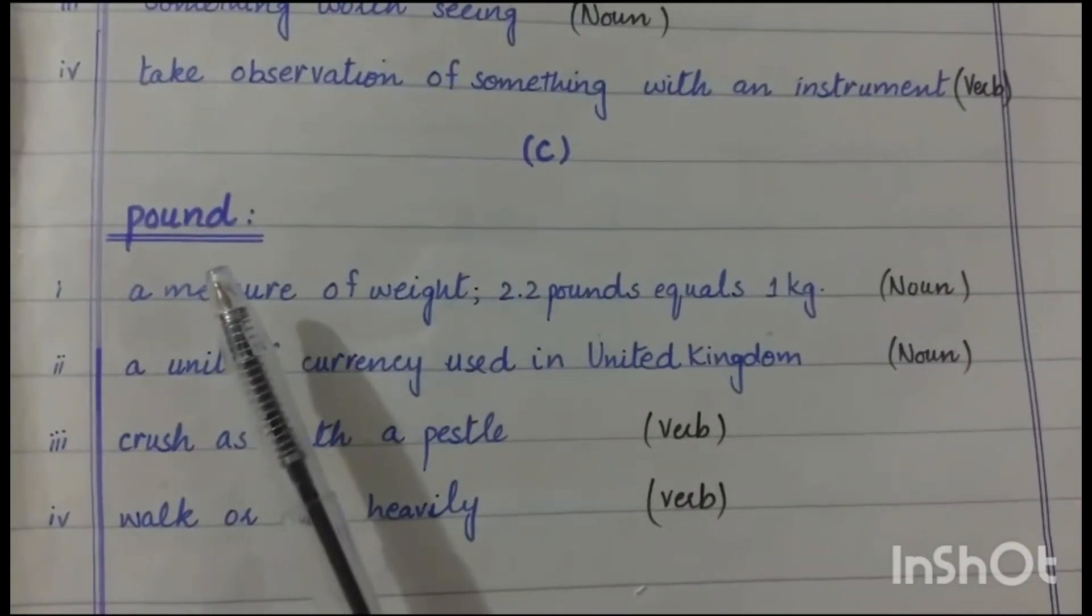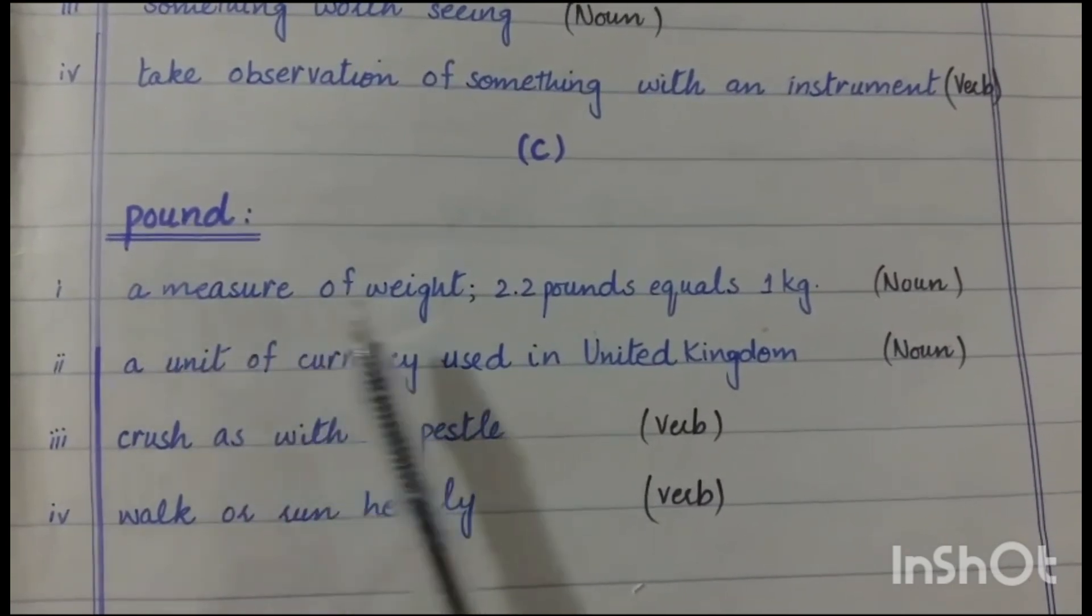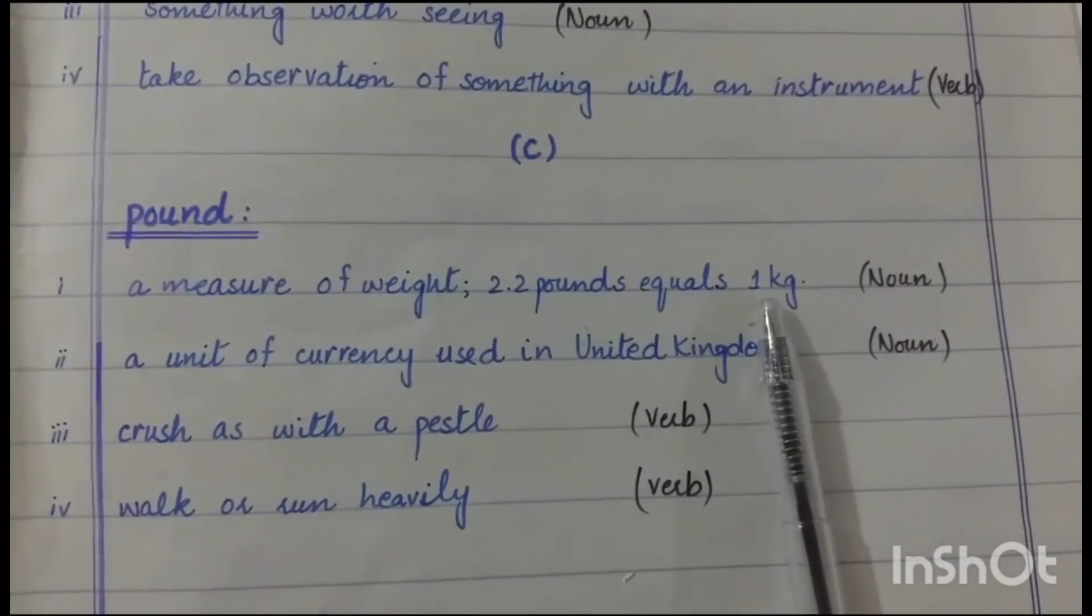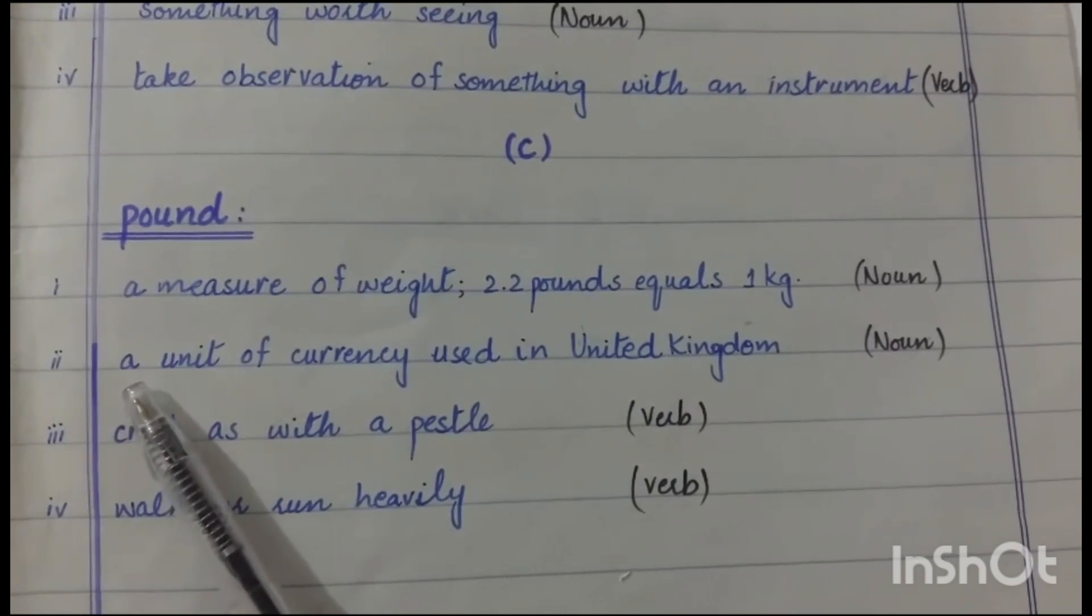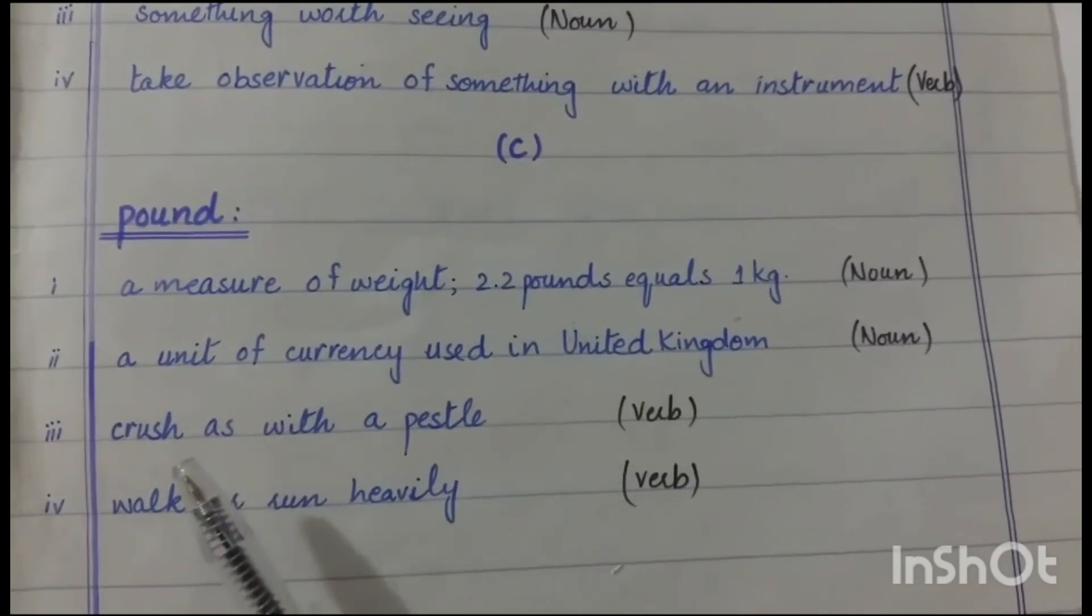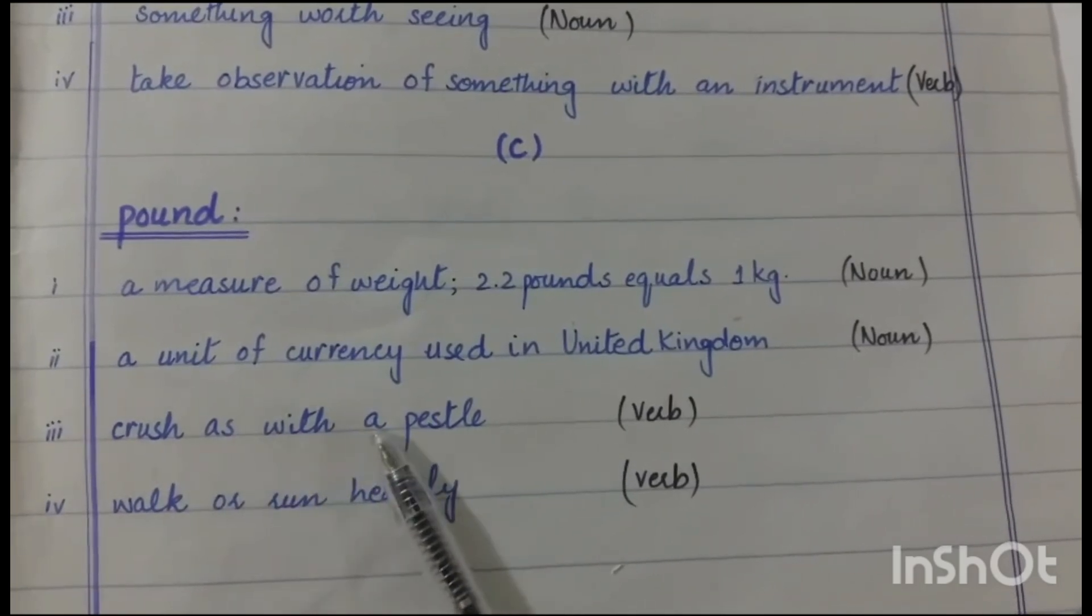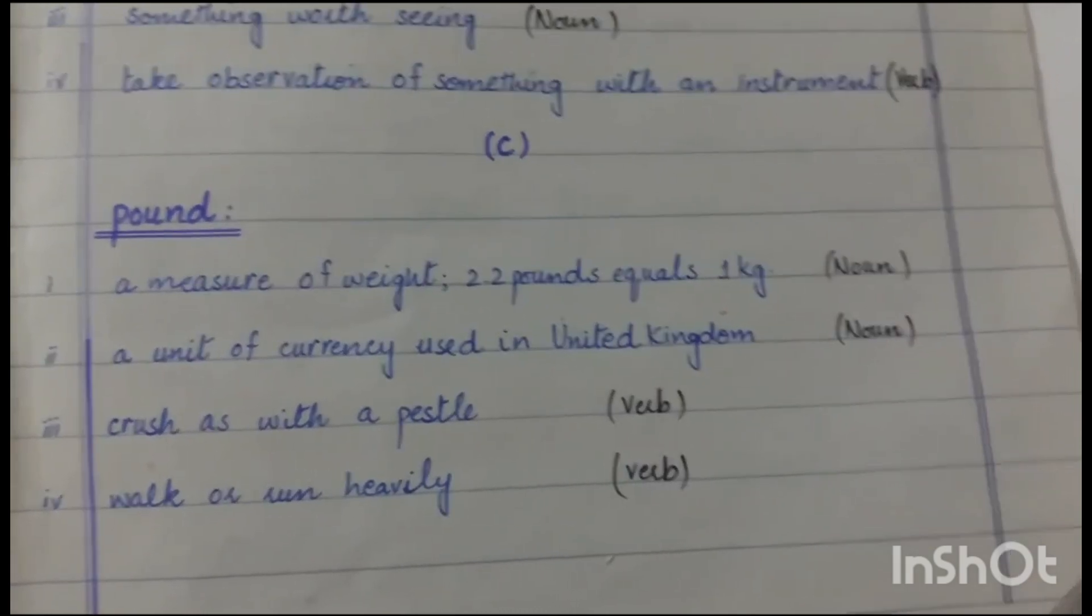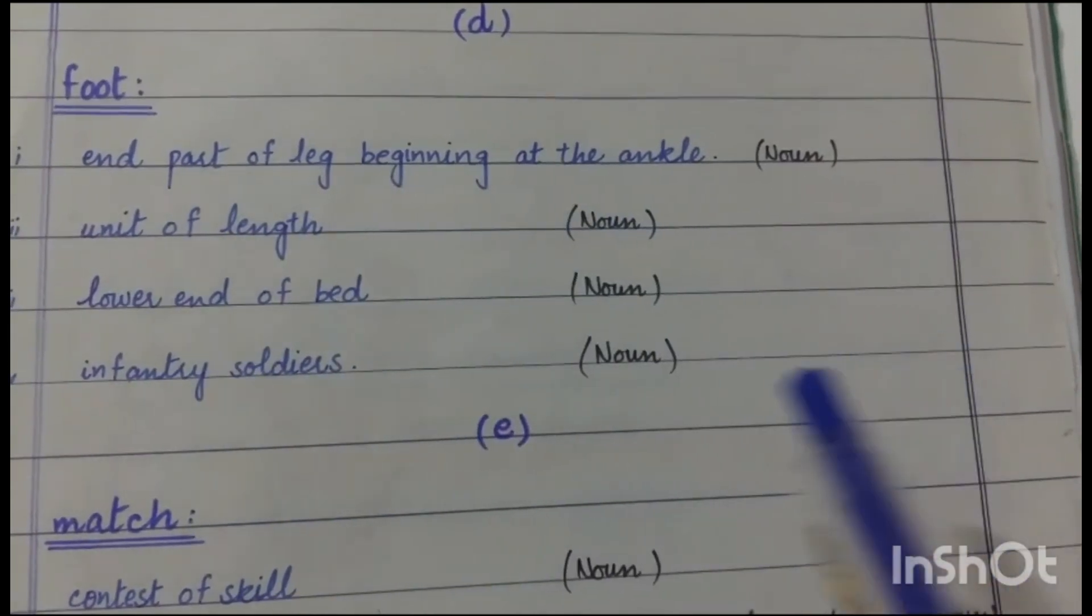Next word is pound. Pound as a noun means a measure of weight, 2.2 pounds equals 1 kg. Second meaning is a unit of currency used in United Kingdom. Pound as a verb means crush something as with a pestle or to walk or run heavily.